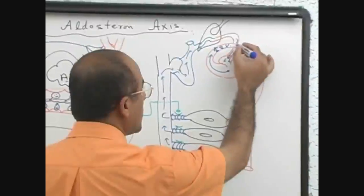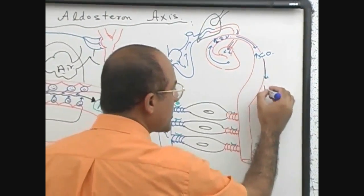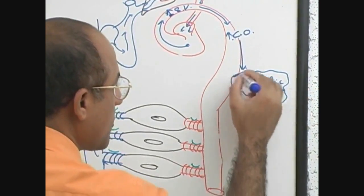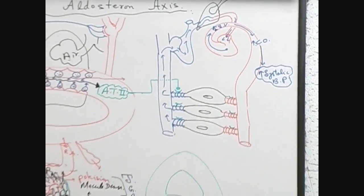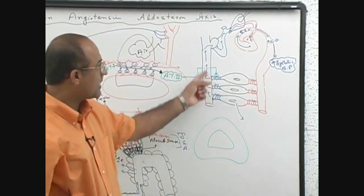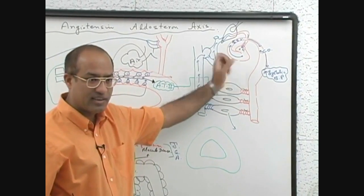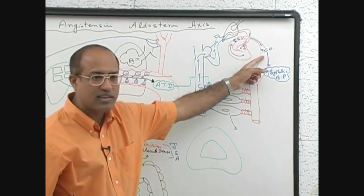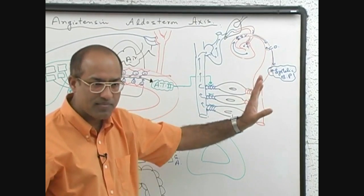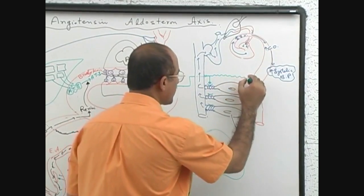Increased stroke volume leads to increased cardiac output. Increased cardiac output leads to an increase in systolic blood pressure — which was the goal. Our systolic blood pressure was falling during bleeding. So by venoconstriction, increasing venous return, increasing end-diastolic volume, increasing contractility and stroke volume, resulting in increased cardiac output, systolic blood pressure is eventually increased. Systolic blood pressure mainly depends on cardiac output. Meanwhile, angiotensin 2 will also act on arterial smooth muscle and arterioles will constrict.